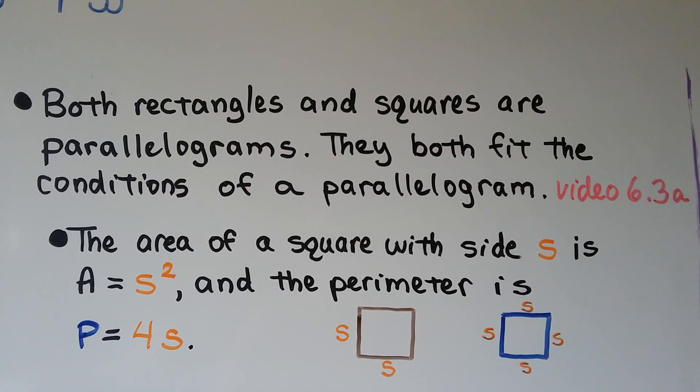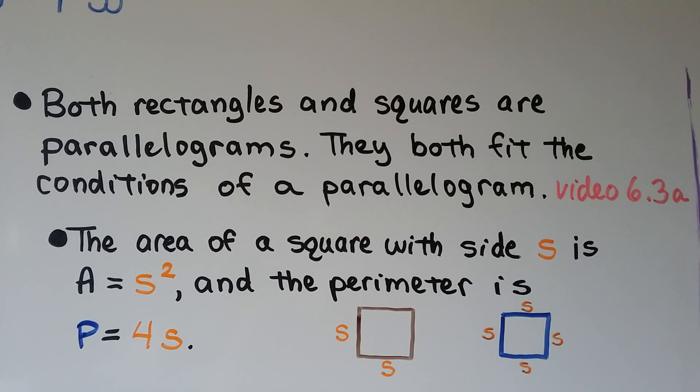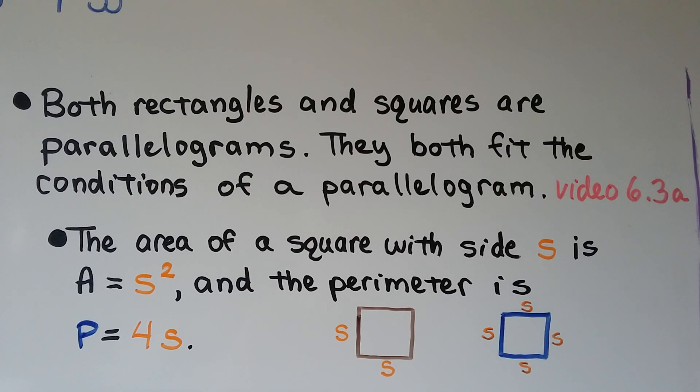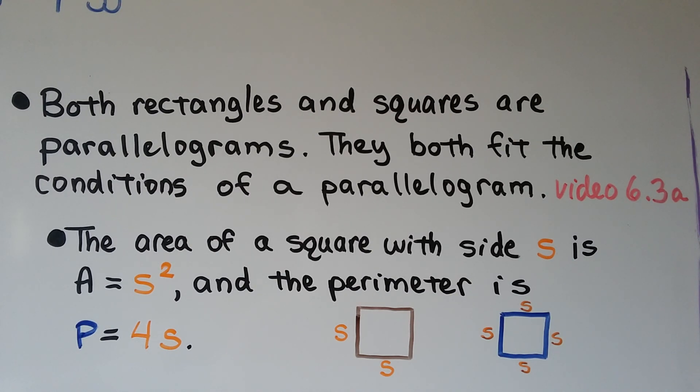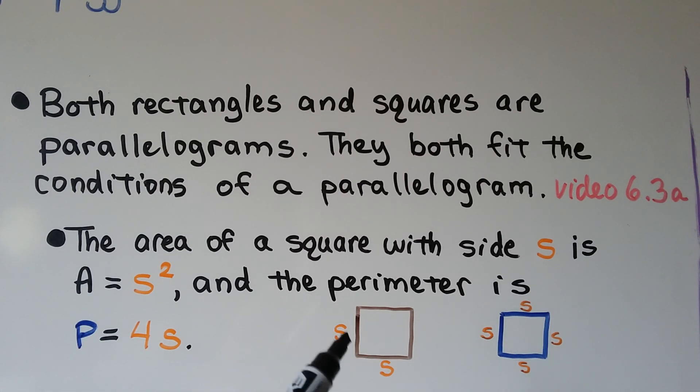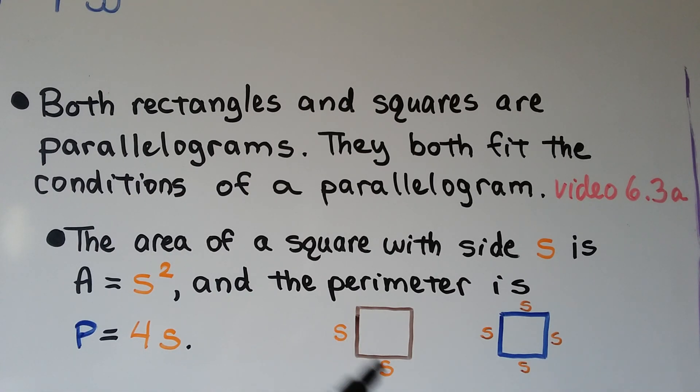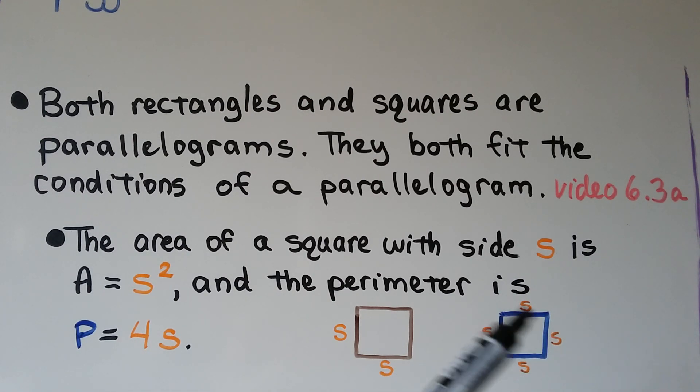Both rectangles and squares are parallelograms. They both fit the conditions of a parallelogram. We learned back in 6.3a about the conditions of a parallelogram. The area of a square with side s is area equals s squared, side squared. And because the definition of a square is that all the sides are the same, we can just do side times side for our base times height. And the perimeter is p equals 4s. All the sides are the same, we just do 4 times whatever the measure of the side is.